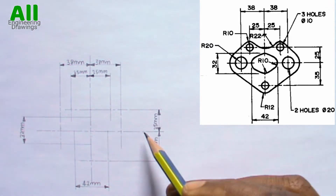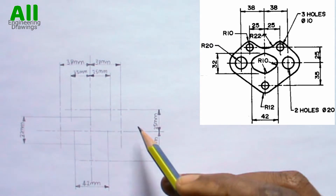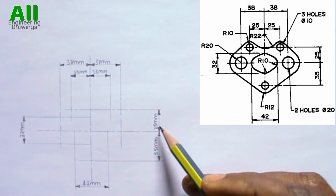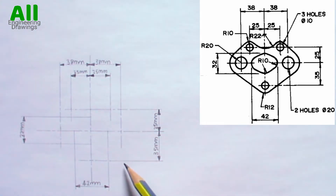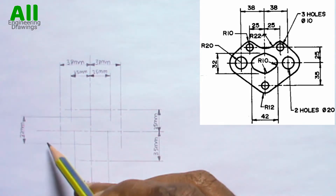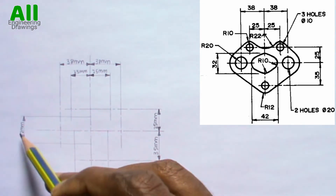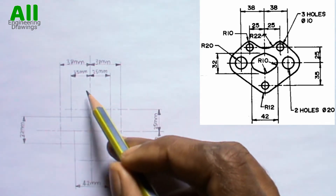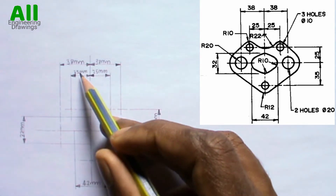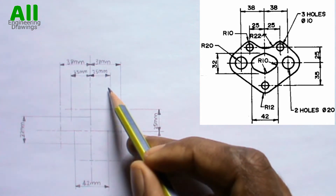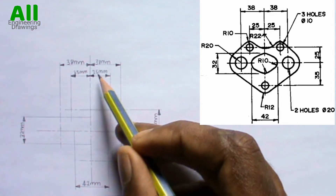As you can see, the distance between this line and this line is 25mm. The distance between this line and this line is 35mm. The distance between this line and this line is 32mm. The distance between this line and this line is 25mm. The distance between this line and this line is also 25mm.